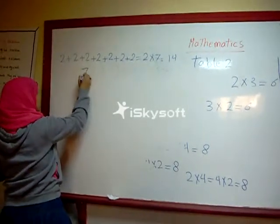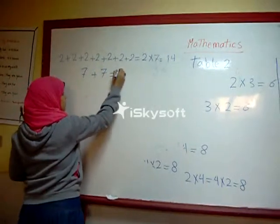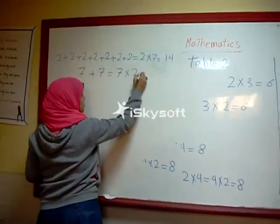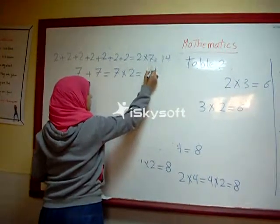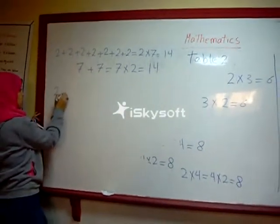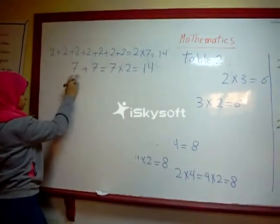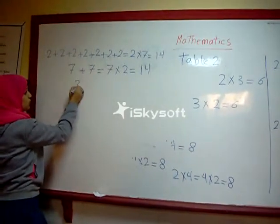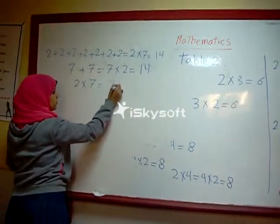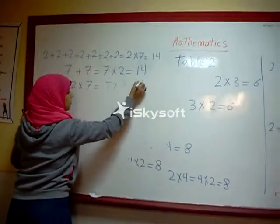Seven plus seven equals seven times two equals fourteen. Then we get two times seven equals seven times two equals fourteen.